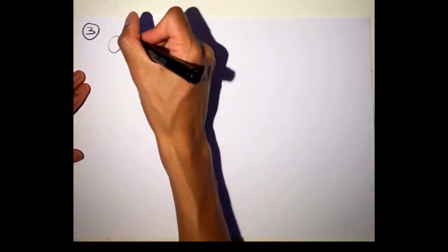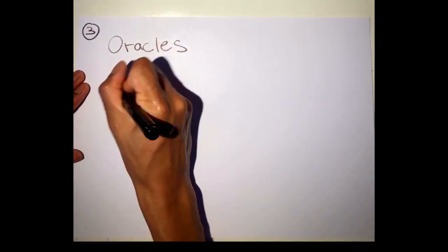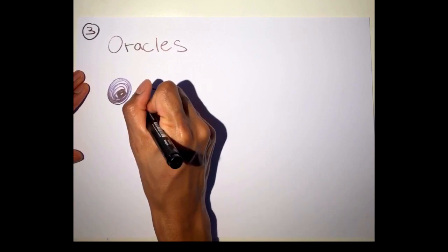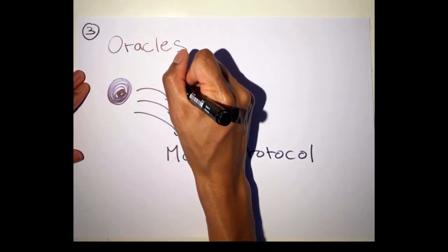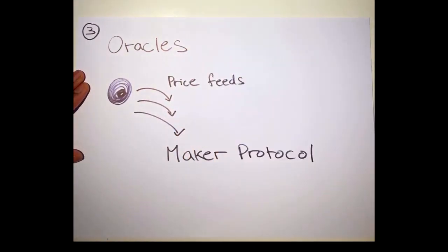The third participant are the oracles. Because blockchains cannot see into the real world, oracles, for example, provide accurate price of Ethereum in real time as reflected in the markets.